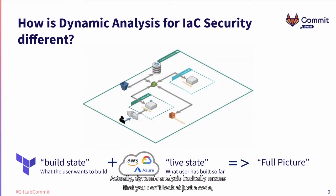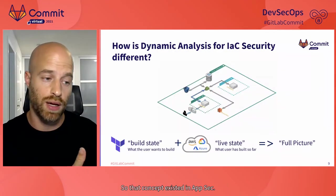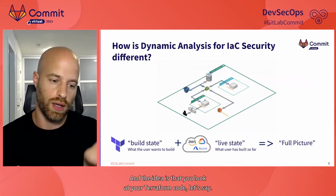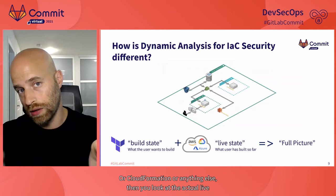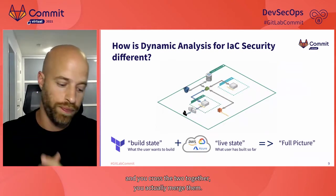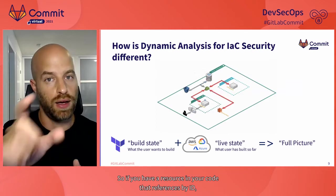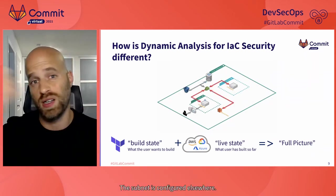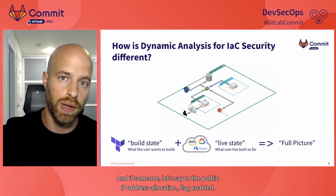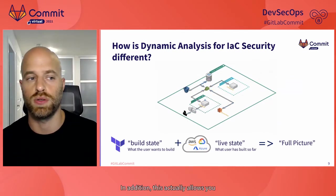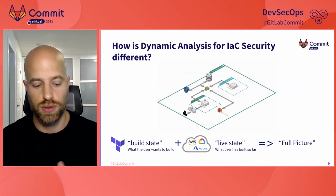We decided to take it a step further and drive dynamic analysis, which allows for much more specific policy enforcement. Dynamic analysis means you don't just look at the code — you look at the code and the live environment together. That concept exists in AppSec as DAST and sometimes RASP, and it exists here in infrastructure as code security. The idea is that you look at your Terraform or CloudFormation code, then look at the actual live cloud account and what is configured there, and you cross the two together. If you have a resource in your code that references by ID some resource in the cloud, you actually connect the dots.